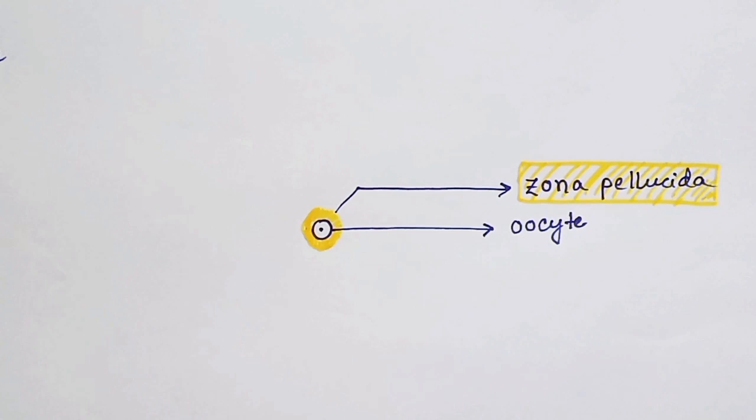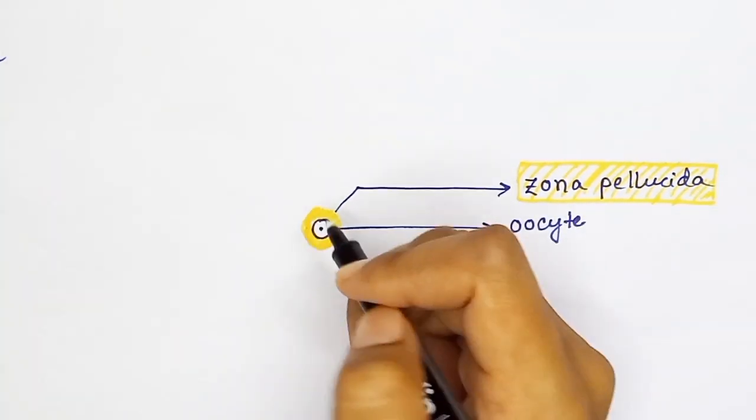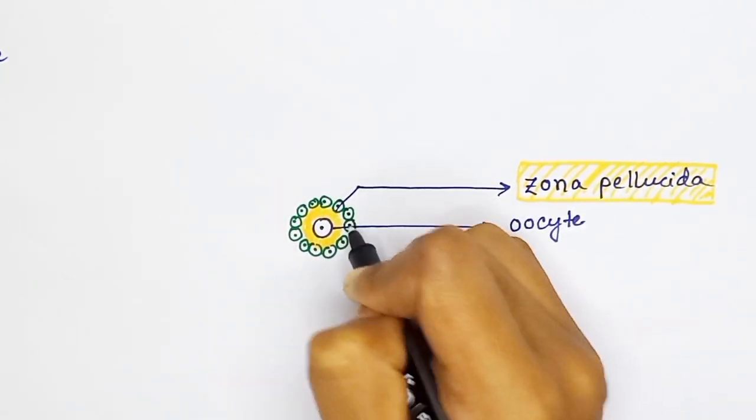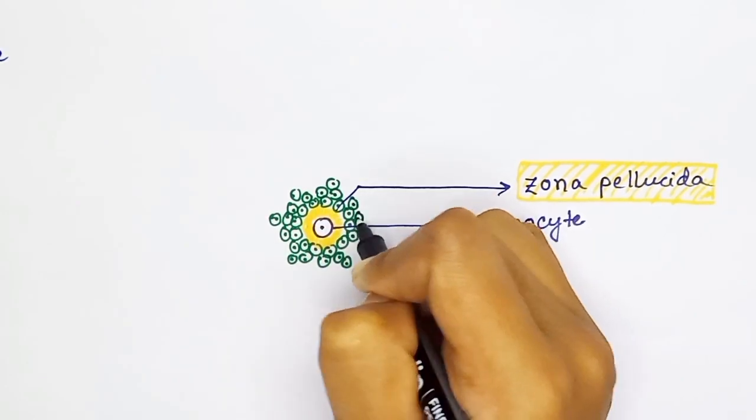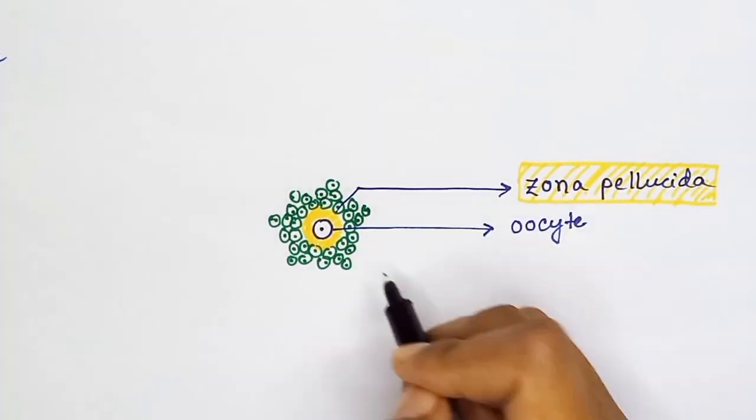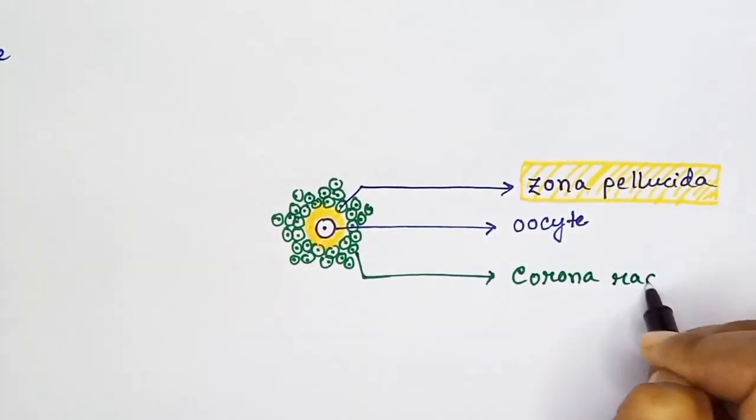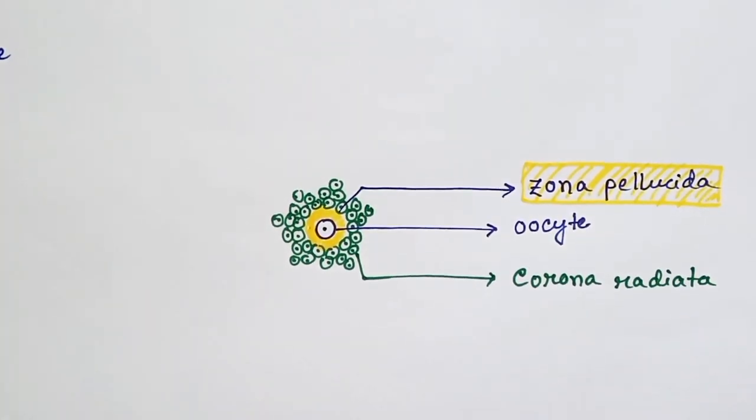It is a non-cellular layer. It contains protein, carbohydrate, and hyaluronic acid. Zona pellucida is surrounded by a cellular layer. This layer is called the corona radiata. It is called so because it is radiating outwards from the oocyte.